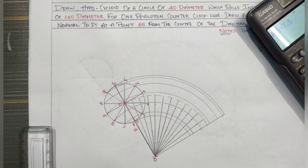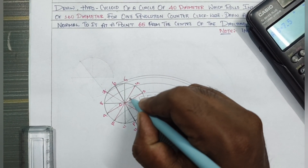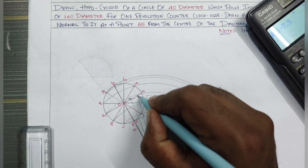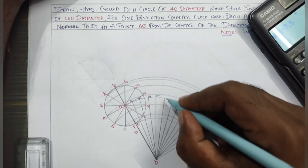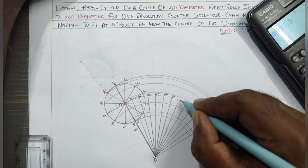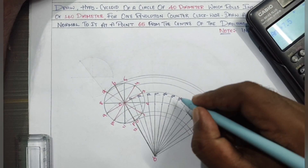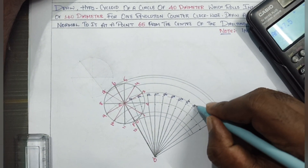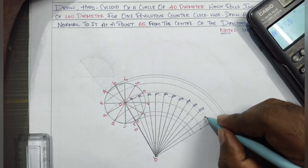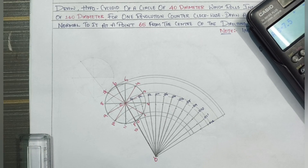Now name the center positions. Using blue color, label them O1, O2, O3, O4, O5, O6, O7, O8, O9, O10, O11, and O12.